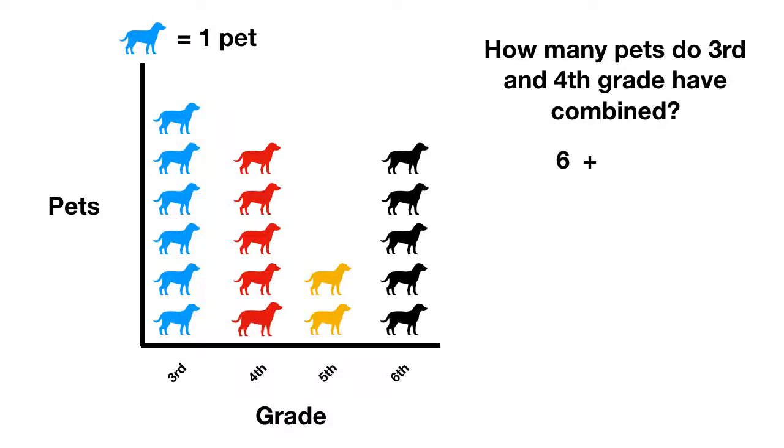Then fourth grade has one, two, three, four, five pets. When you add this up, you get 11 pets.